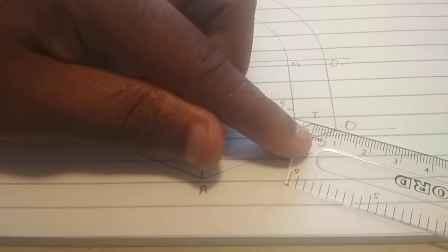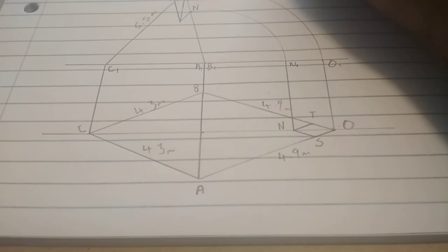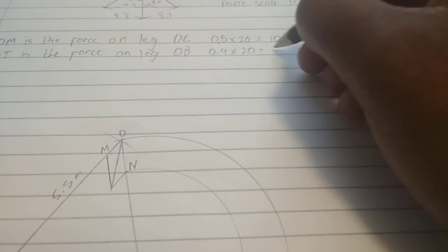When we measure it, it measures about 0.9. 0.9. 0.9 times 20 to convert it becomes 18 kilonewtons.